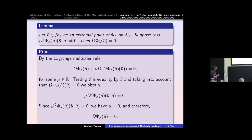A local minimum or maximum point of the functional restricted to the Nehari manifold is called an extremal point on the Nehari manifold. But of course, it is not necessarily true that extremal points are solutions of our problem. Here the following question arises: if we assume that U is an extremal point of the functional on the Nehari manifold, and suppose that this condition is satisfied, then these points will be critical points of our functional. The proof is by the Lagrange multiplier rule — if we have a constrained critical point, by the Lagrange multiplier rule we have this equality for some multiplier mu.